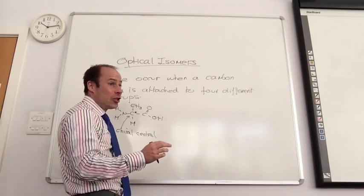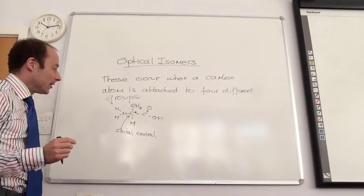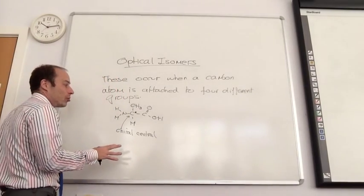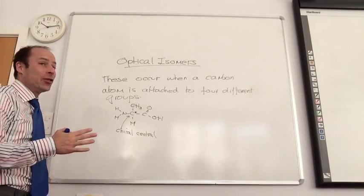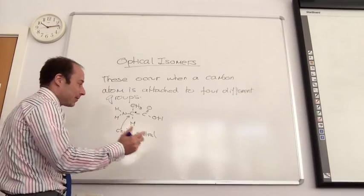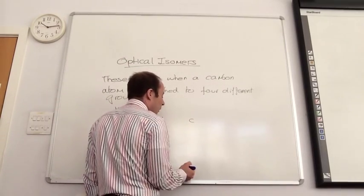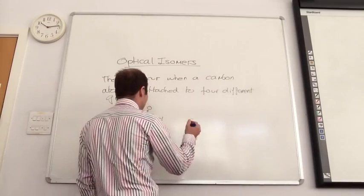But if they ask you to draw the optical isomer, do not draw it like that. You must always draw it in the 3D representation. So this is how you do it. Well, you can do it in different ways. This is how I would do it.